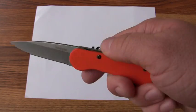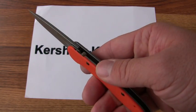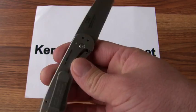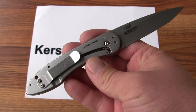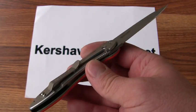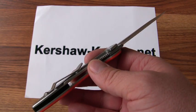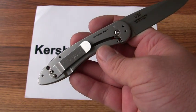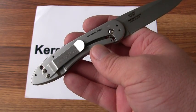On one side we've got an orange G10 overlay. The other side is stainless steel, 410 stainless steel, with an integrated frame lock. This side also has the reversible pocket clip.